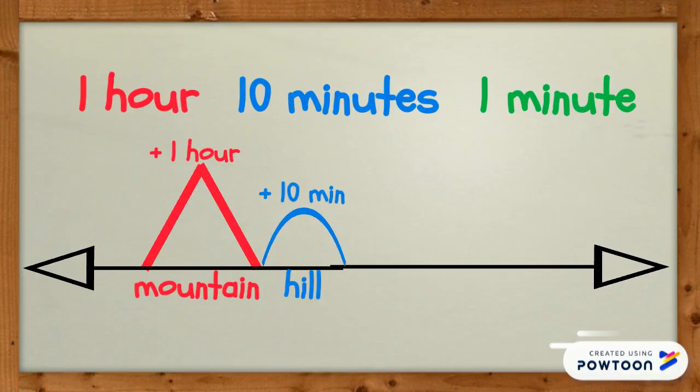One minute is the shortest amount of time we will use on our number line. When one minute passes by, we will draw a small rounded jump and call it a rock.